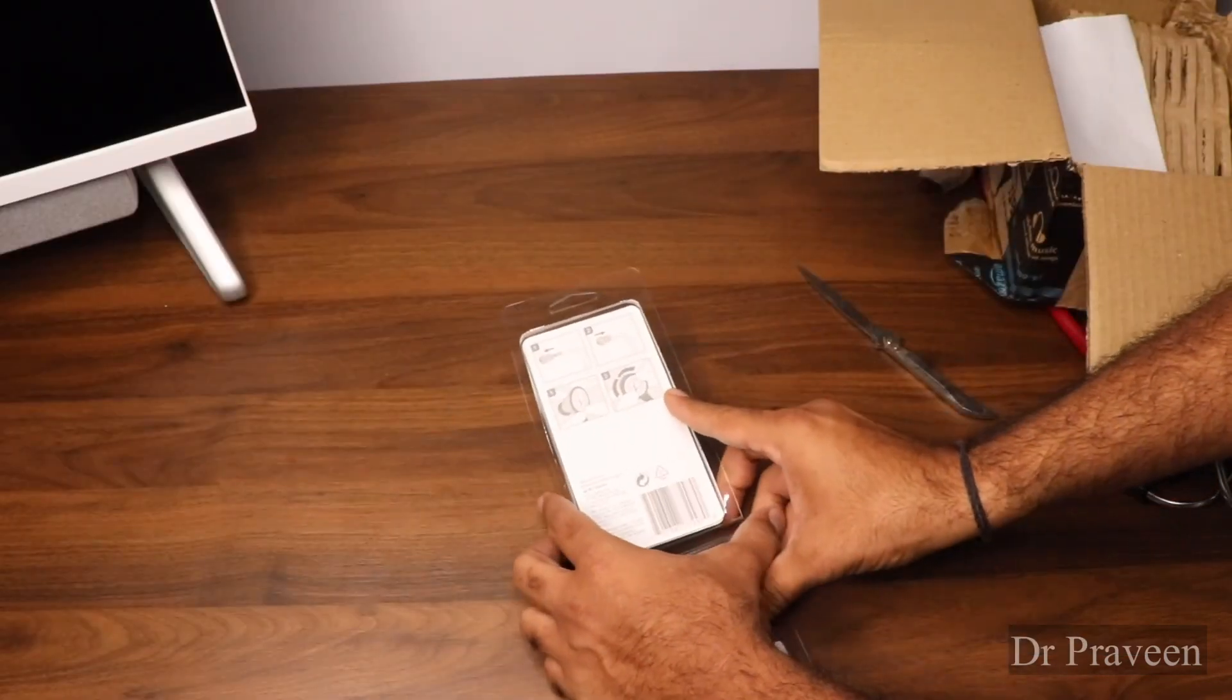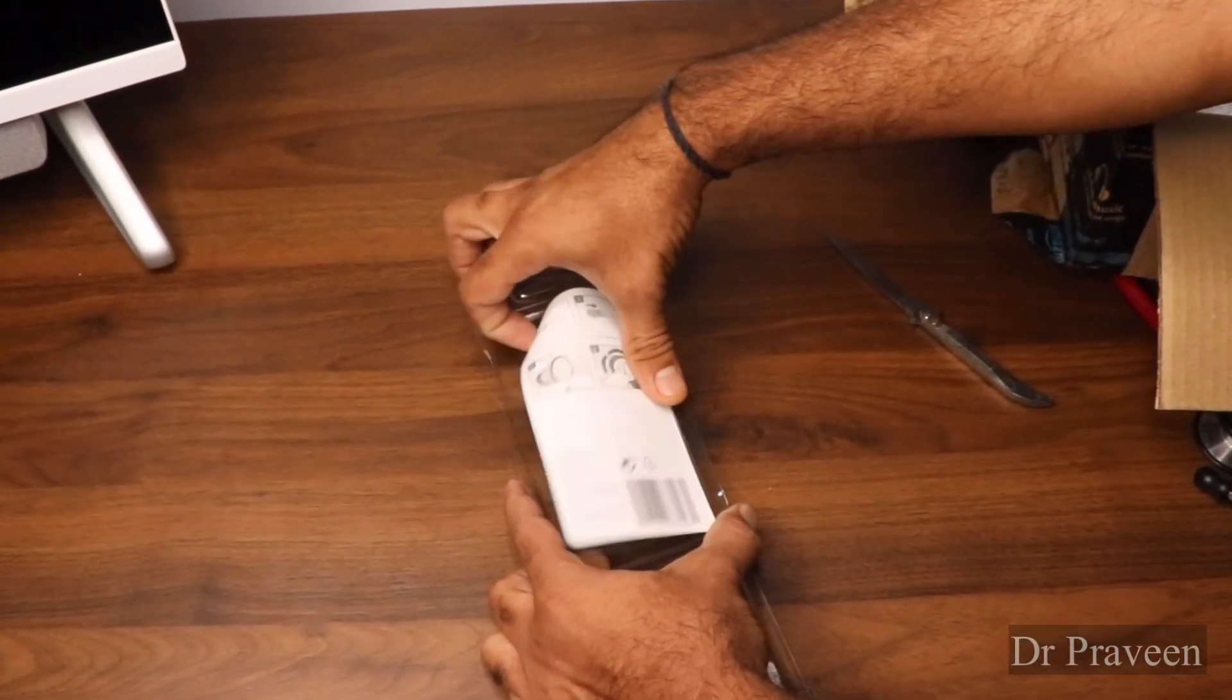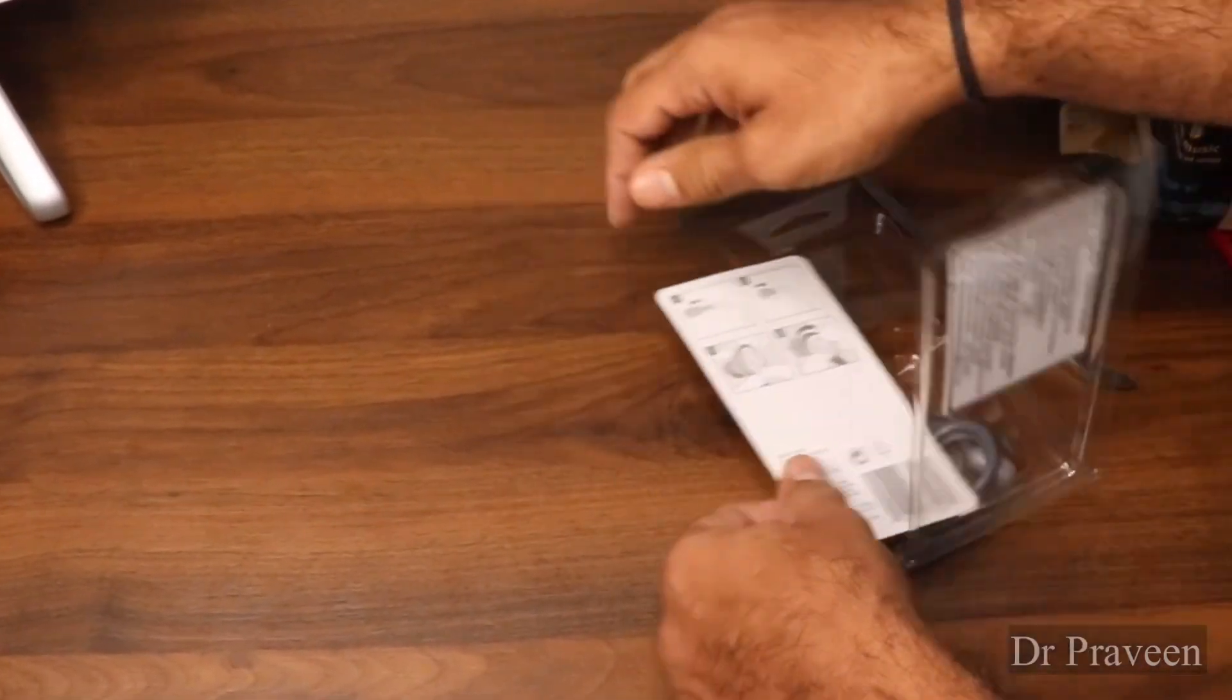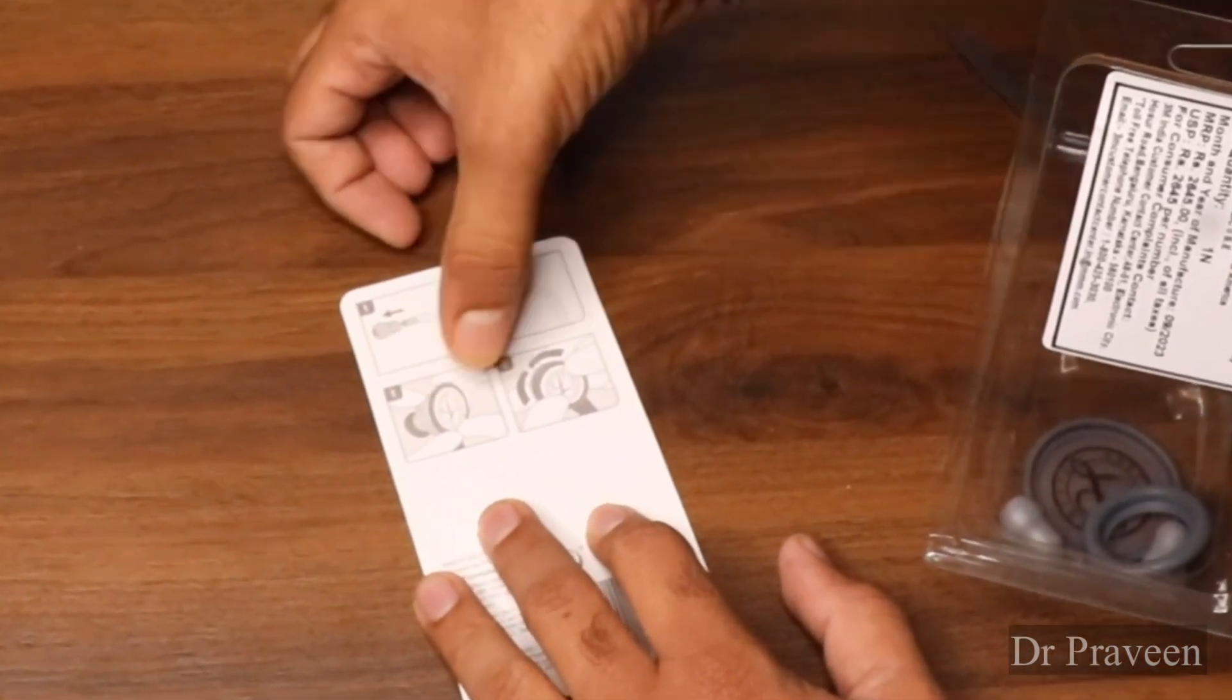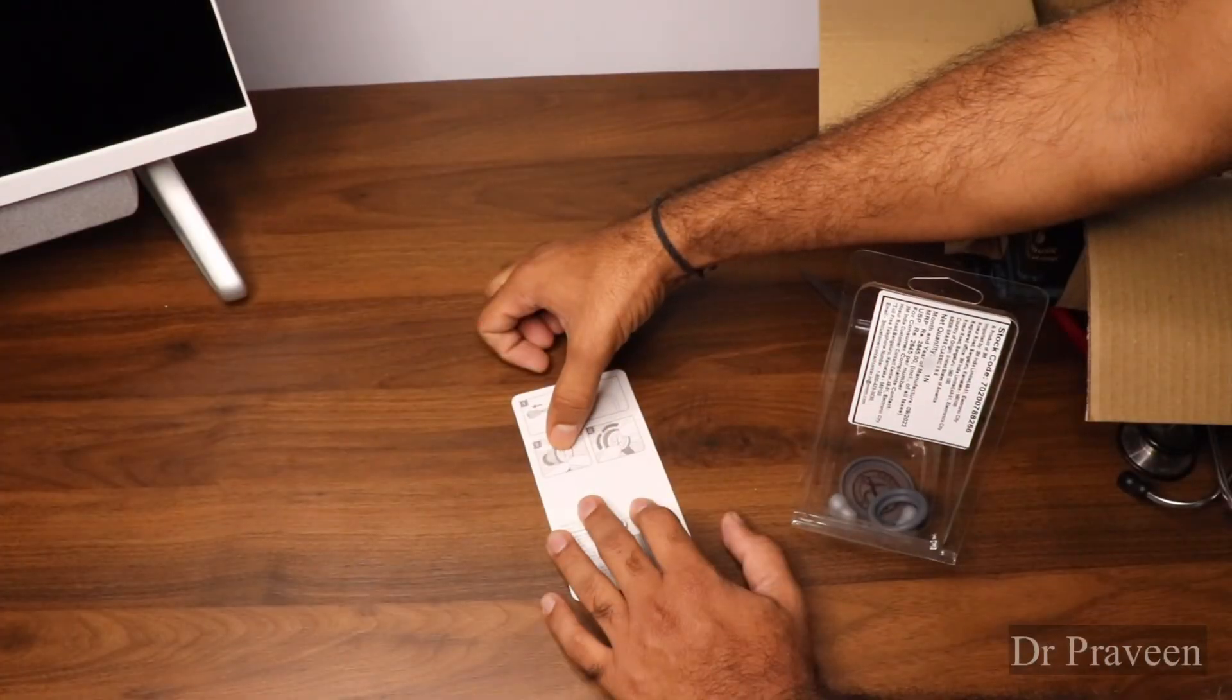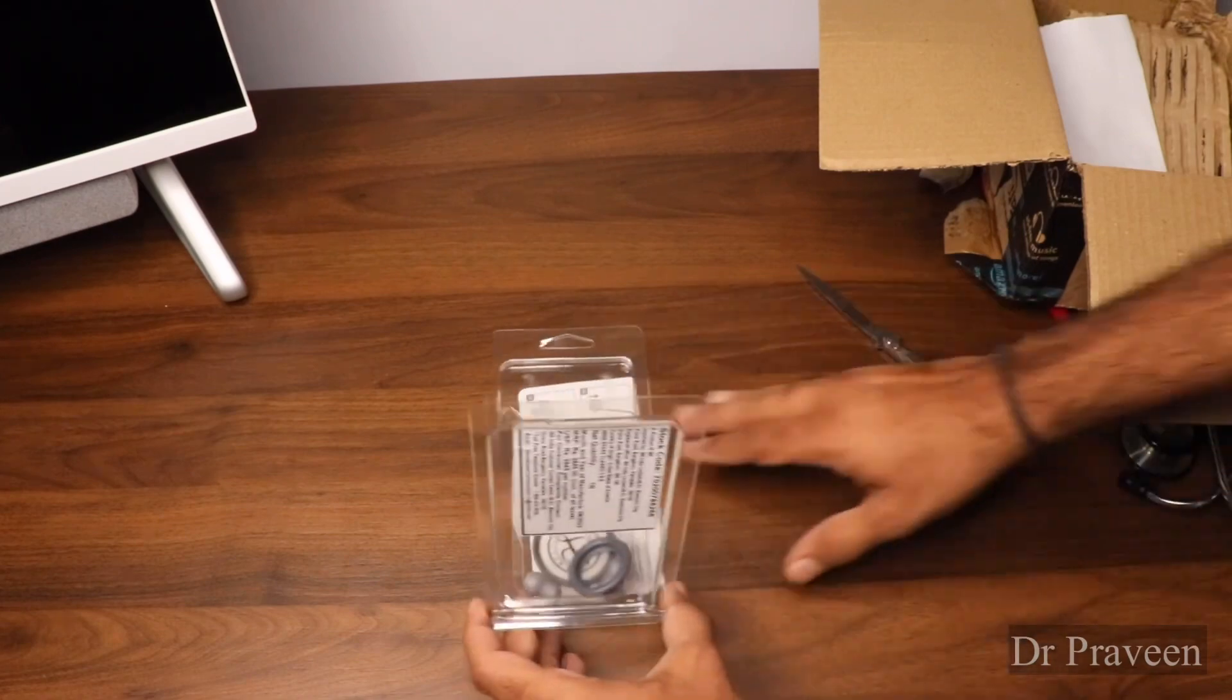There are some instructions given, the method of replacing. We'll first look into that. First we're asked to replace the earpiece, then the diaphragm. It has to be rotated, fixed on the belly and rotated on the other side.